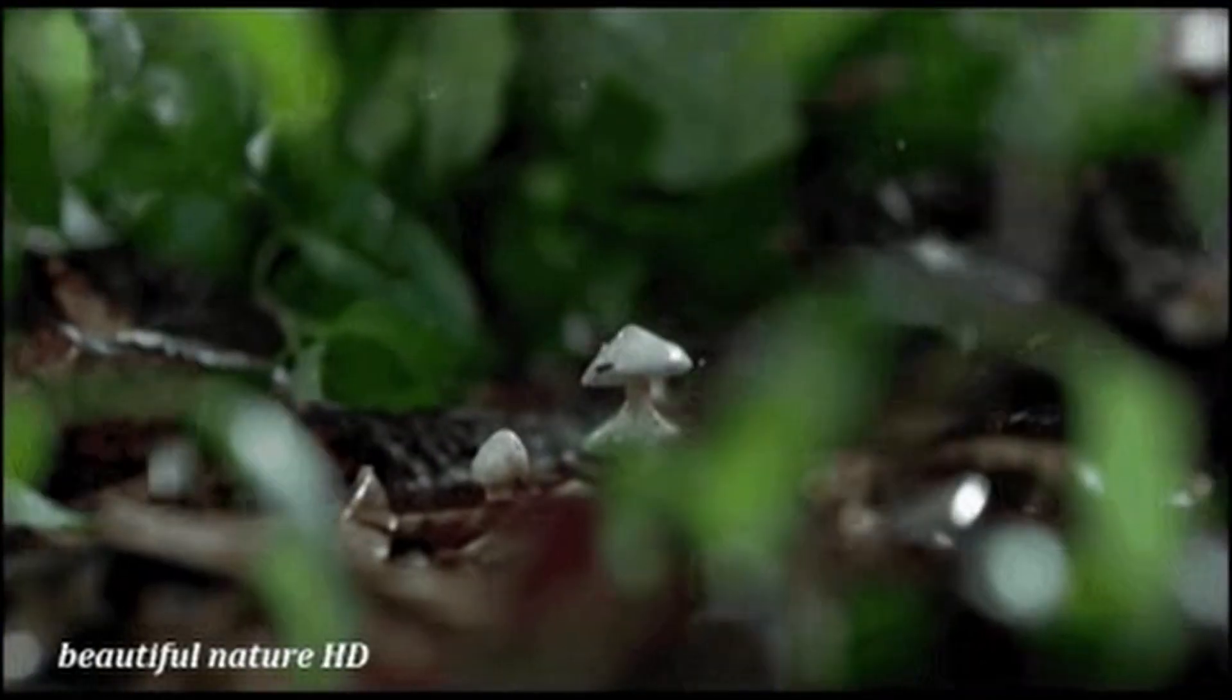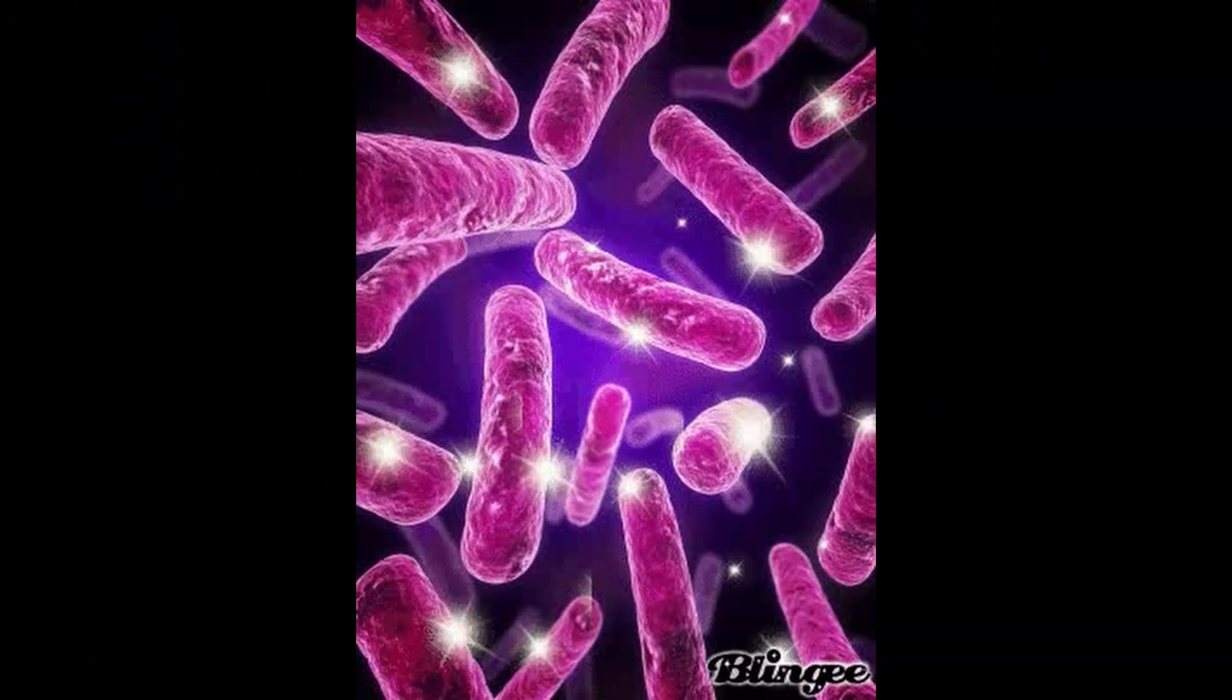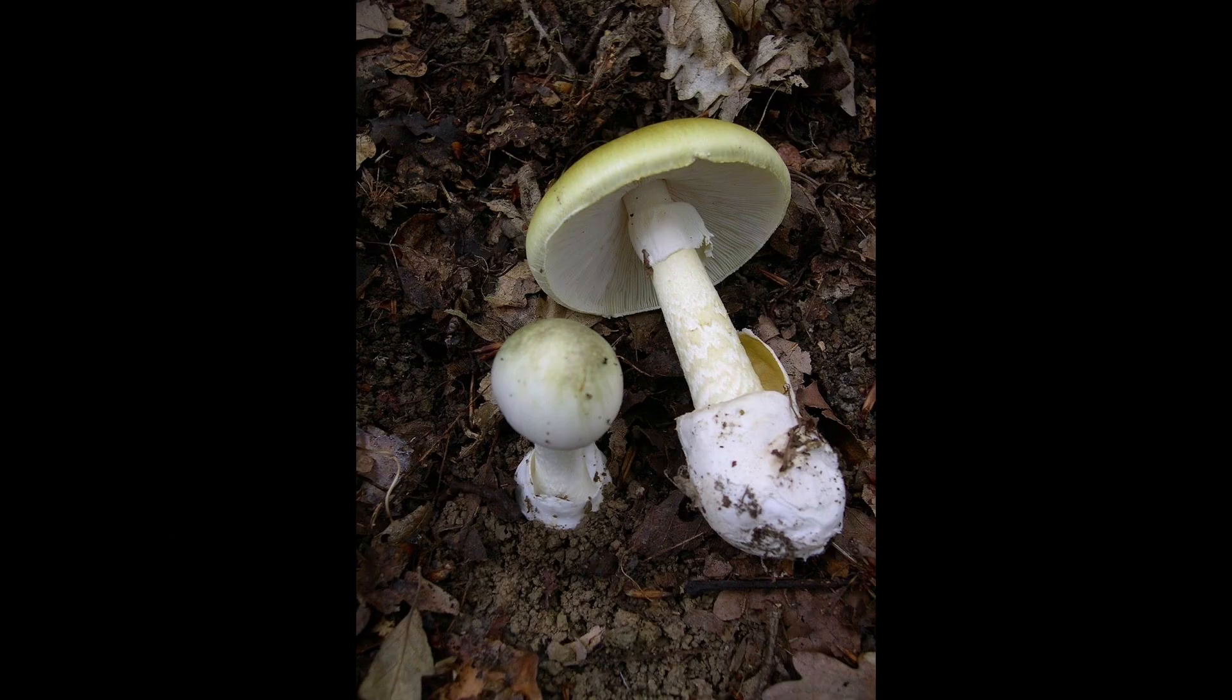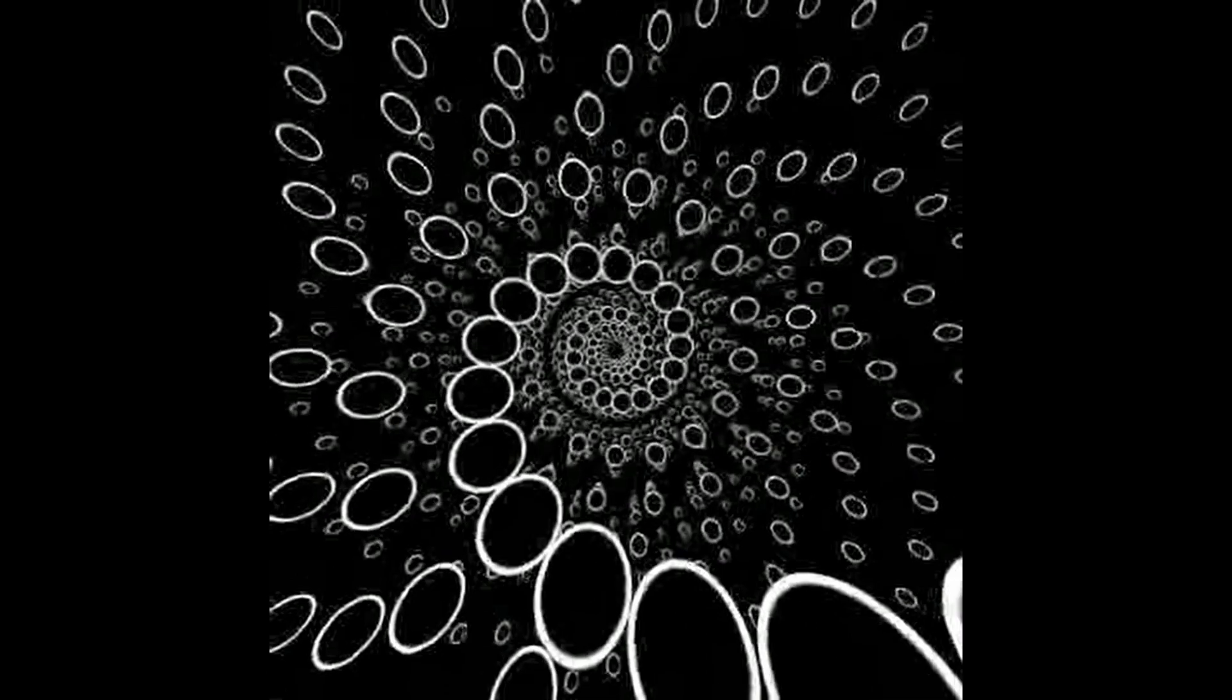The Amanita phalloides, commonly known as the death cap, was first discovered in the 1970s in the area north of Rochester, New York. It was found growing under Norway spruce trees that had been imported as nursery stock decades earlier. Since then, it has been increasingly found under native oaks in the New York area. This infamous mushroom, responsible for 90% of annual mushroom-related deaths, has spread globally, including regions like Australia, New Zealand, and North America. Its rapid expansion and impact on ecosystems continue to be subjects of investigation.